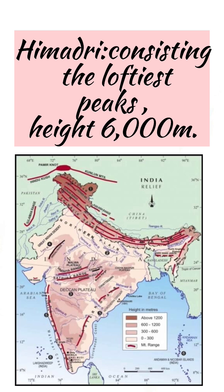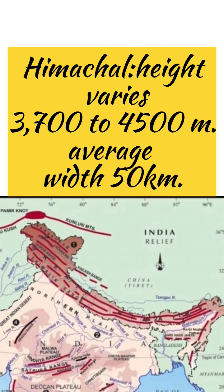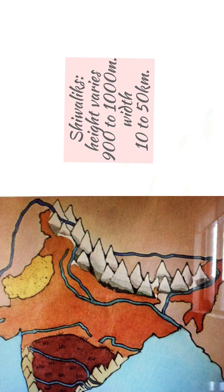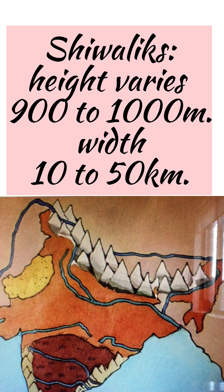Let us know some details about each. Himadri consists of the loftiest mountain peaks, with heights up to 6000 meters. Next, Himachal consists of mountain peaks with heights varying from 3700 to 4500 meters. And Shivalik consists of mountains with heights varying from 900 to 1000 meters. Hope you like the video. Please like, share, and subscribe. Thank you.